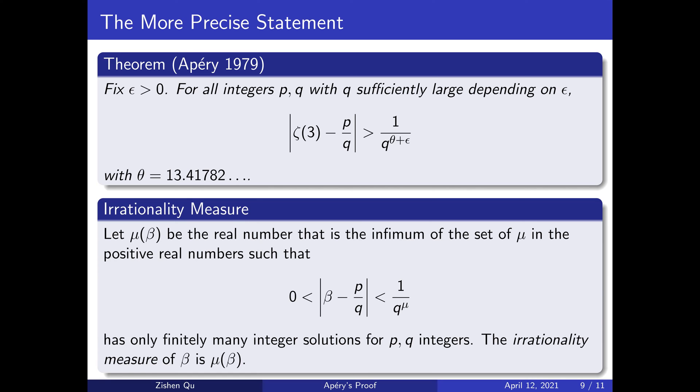Indeed, we just now showed that there are infinitely many good rational approximations to ζ(3) in order to obtain irrationality. Of course, the goodness of the bounds are different here. To explain the statement, we have to define the idea of irrationality measure.